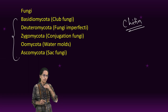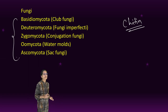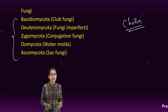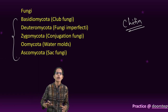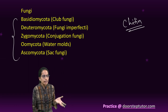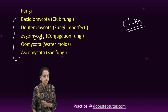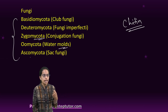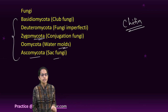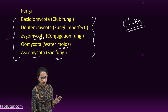Under Fungi, there are five classifications: Basidiomycota (club fungi), Deuteromycota (imperfect or false fungi), Zygomycota (conjugation fungi), Oomycota (water molds), and Ascomycota (sac fungi).